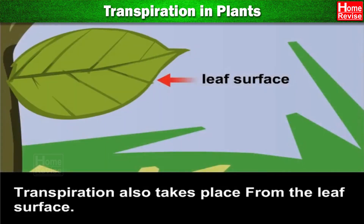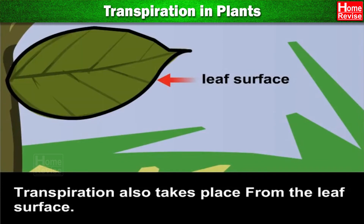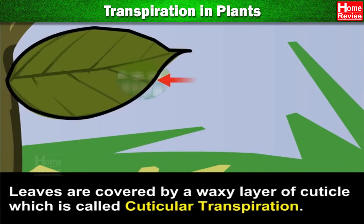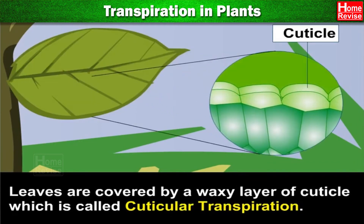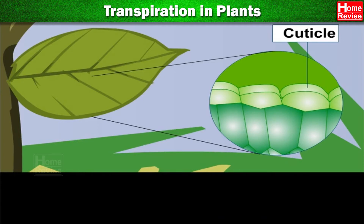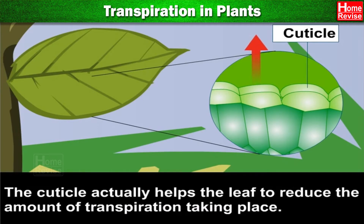Transpiration also takes place from the leaf surface. Leaves are covered by a waxy layer of cuticle, which is called cuticular transpiration. The cuticle actually helps the leaf to reduce the amount of transpiration taking place.